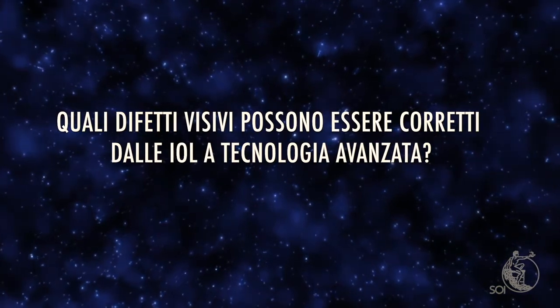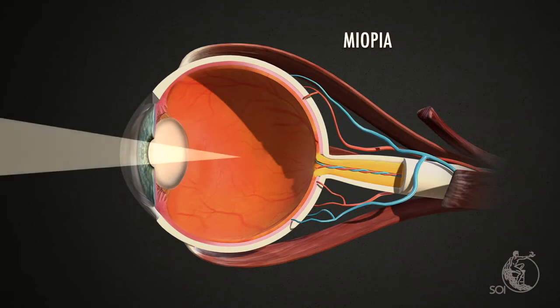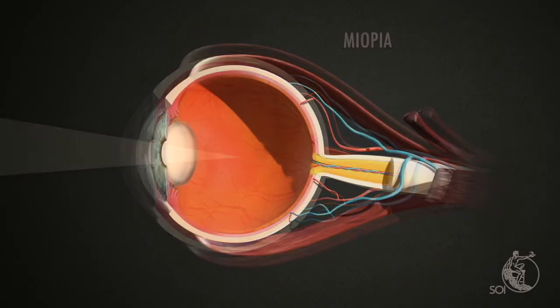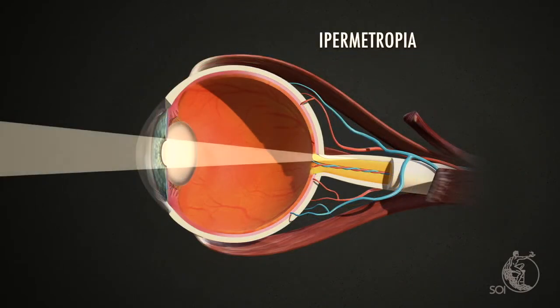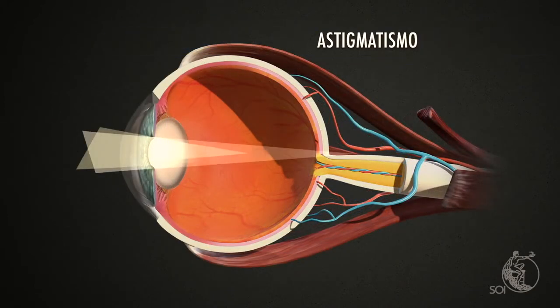What visual defects can Advanced Technology IOLs correct? The Advanced Technology Intraocular Lenses are able to correct defects due to myopia, hyperopia, astigmatism, and presbyopia.